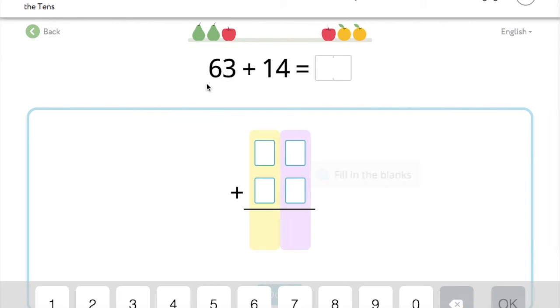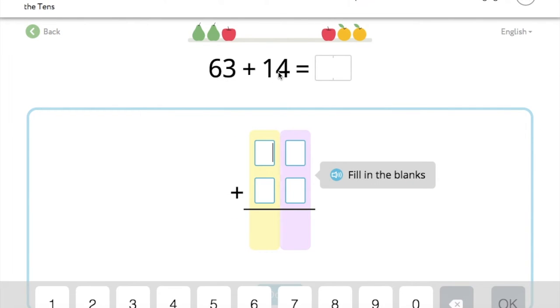Let's do another one. 63 plus 14. 63 on top. So 6 in the tens place. What number in the ones place? 3. Very good.